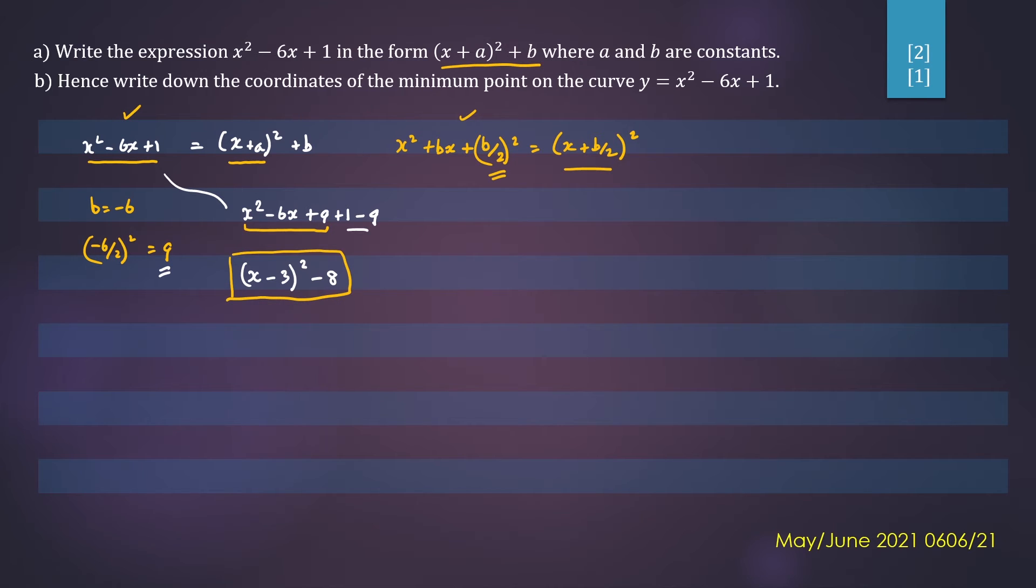So in part B, we need to write down the minimum point. Now, the minimum point is the vertex, which is h, k. And the standard form for the quadratic can be written as y equals a, x minus h all squared plus k.